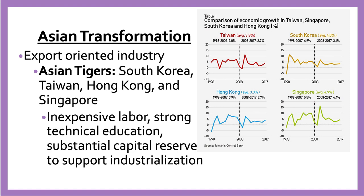In East Asia after World War II, governments more actively encouraged export-oriented markets. You have the emergence of the Asian Tigers — South Korea, Taiwan, Hong Kong, and Singapore — which all became economic powers in the 1970s and 80s due to inexpensive labor, strong technical education, substantial capital reserves, and support for industrialization. Japan had tremendous economic growth but experienced a huge economic depression in the 1990s. So you have these new industrialized countries emerging across East Asia.